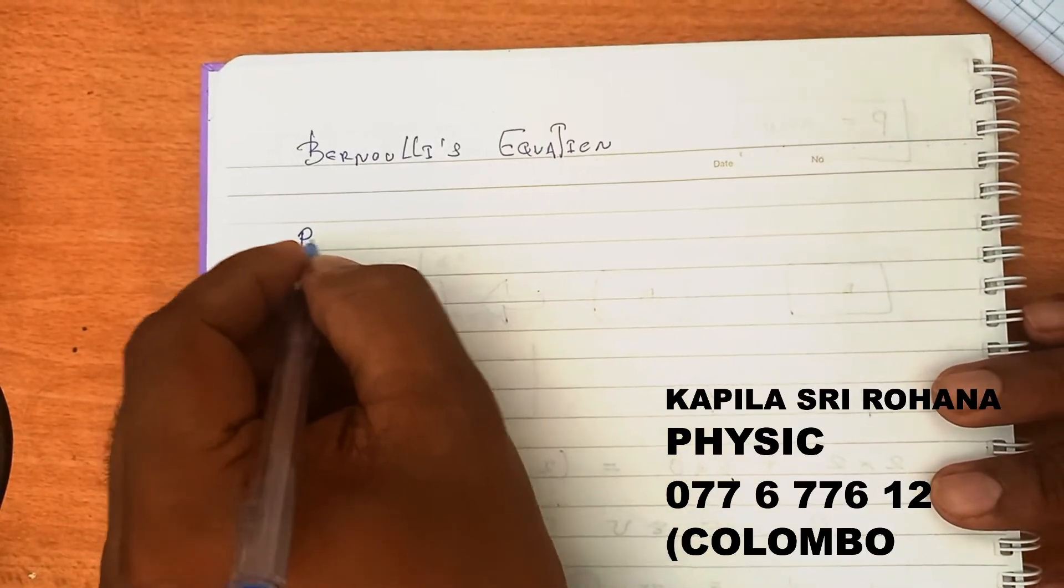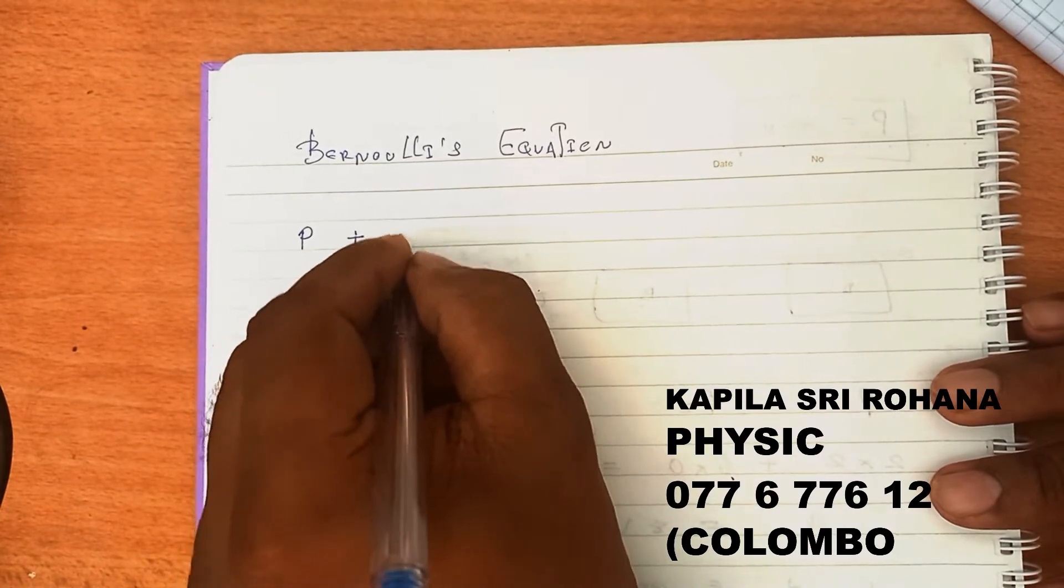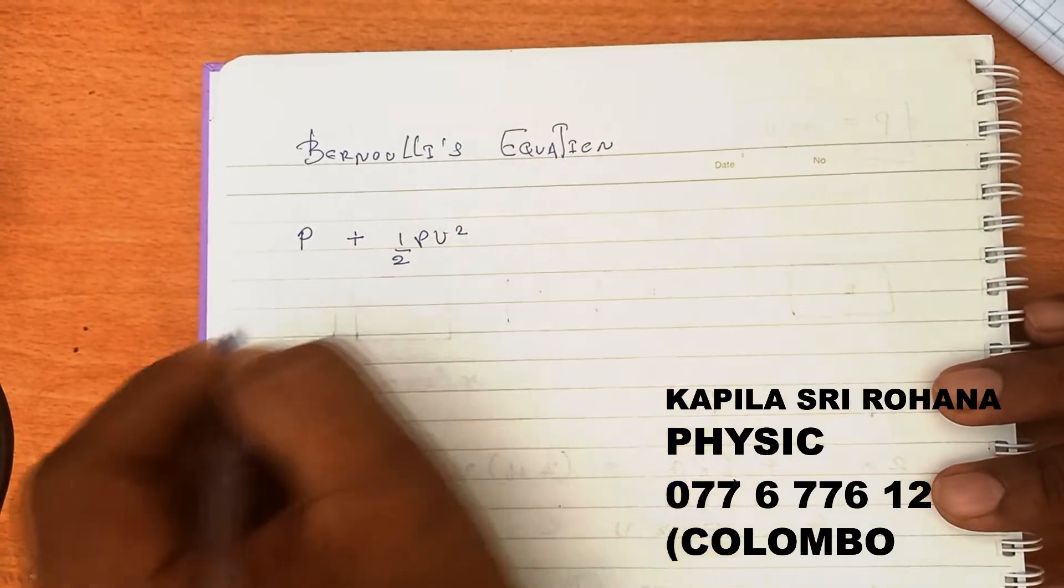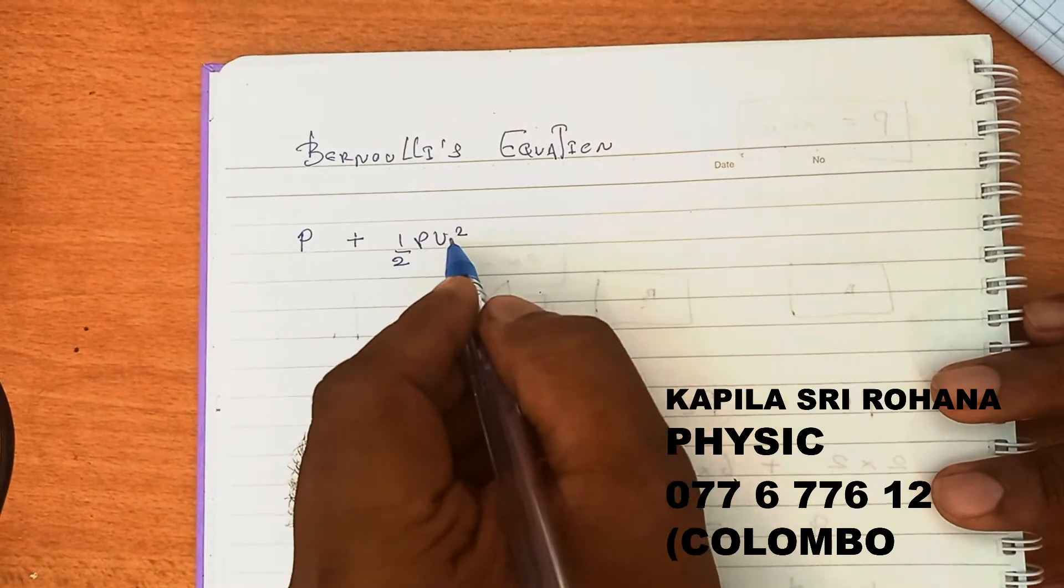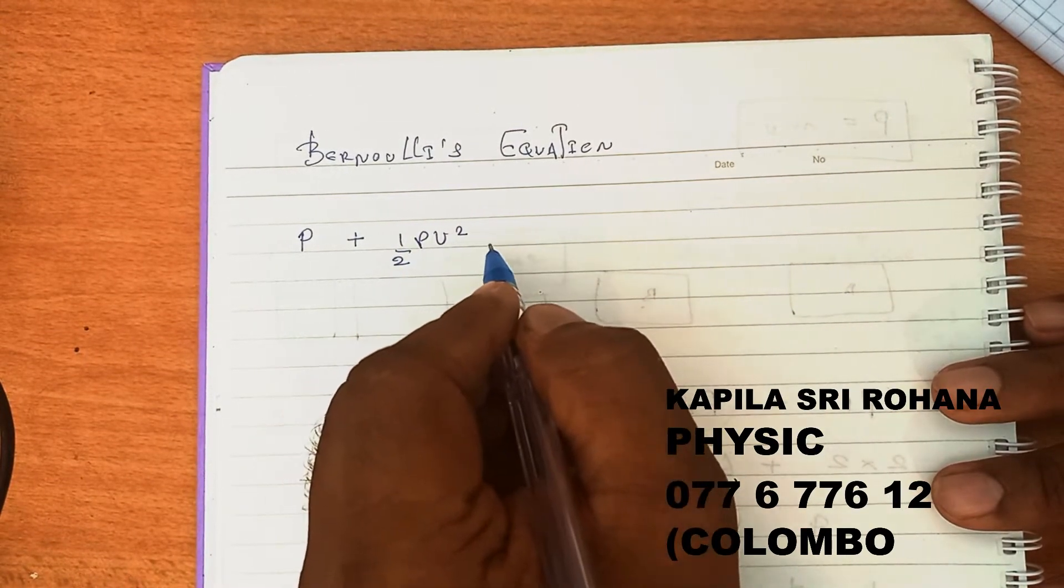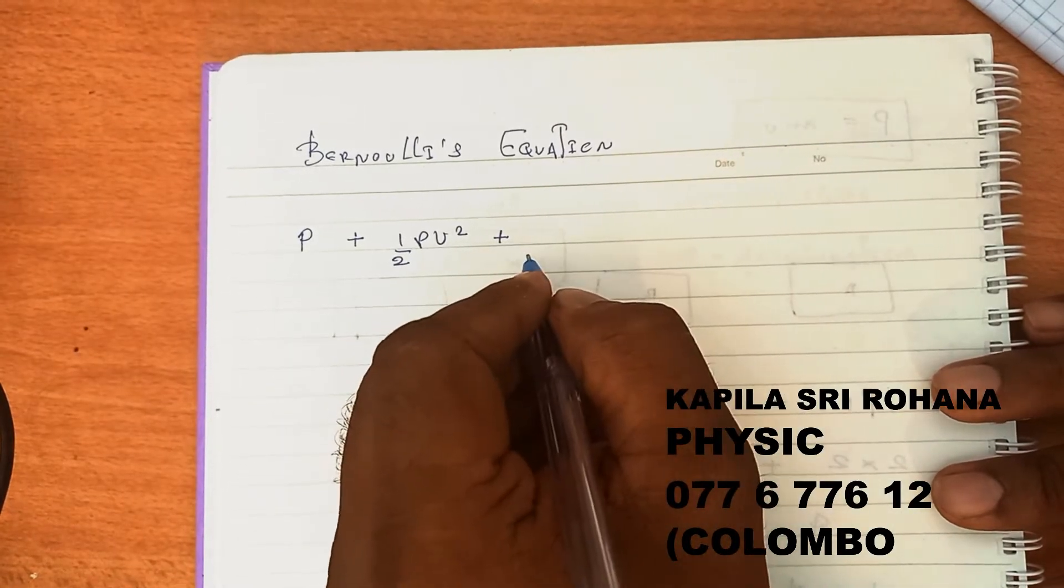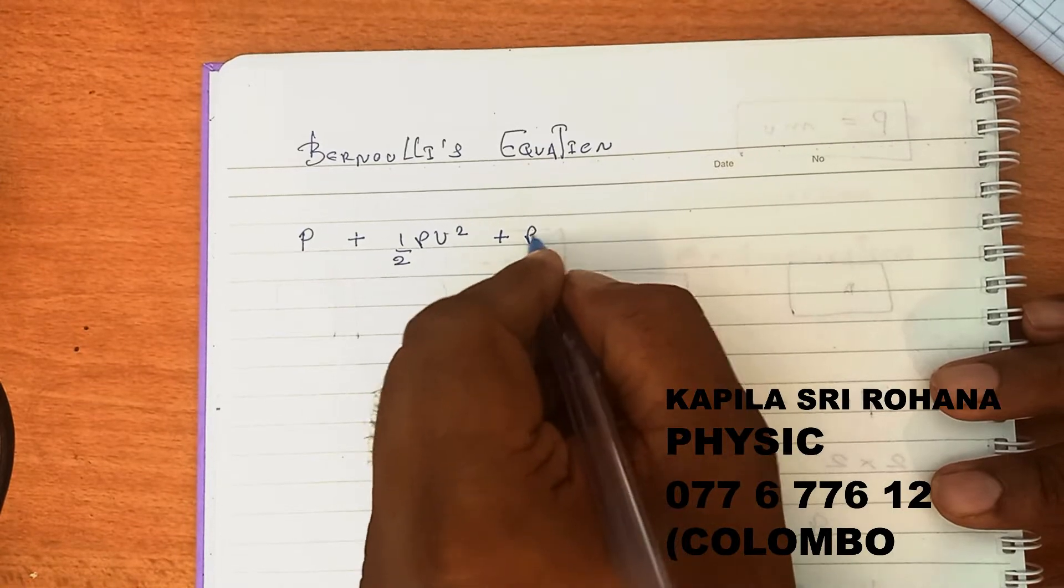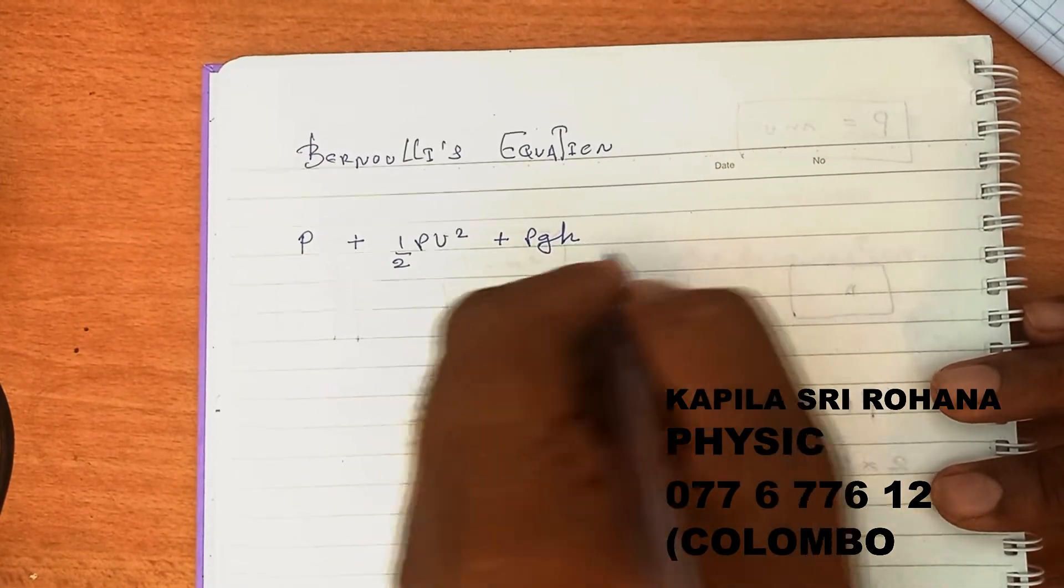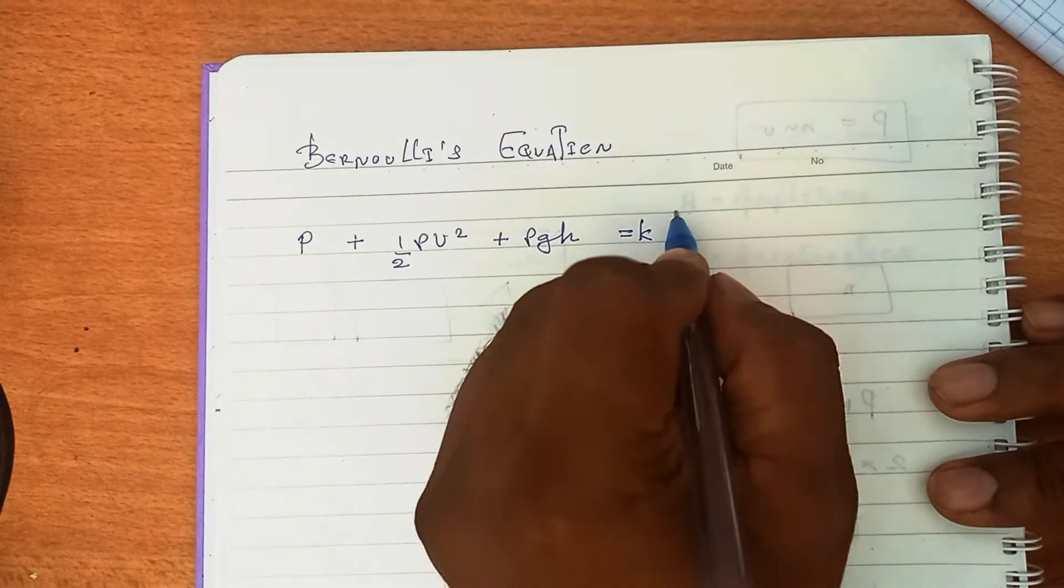Sum of pressure, kinetic energy per unit volume 1/2ρv², not 1/2Mv². 1/2Mv² is the kinetic energy, 1/2ρv² is kinetic energy per unit volume. Potential energy Mgh, but ρgh is the potential energy per unit volume. It's a constant. This is Bernoulli's Equation.